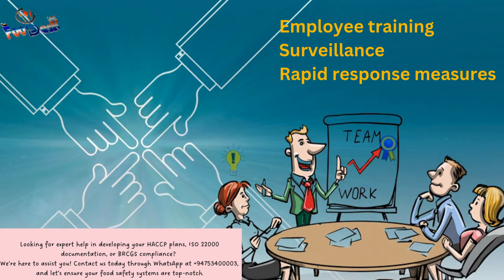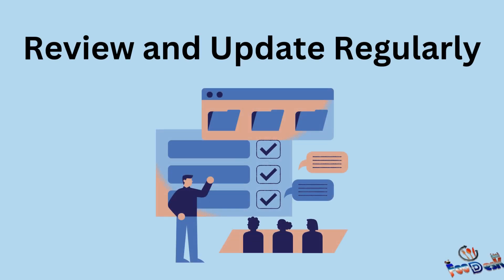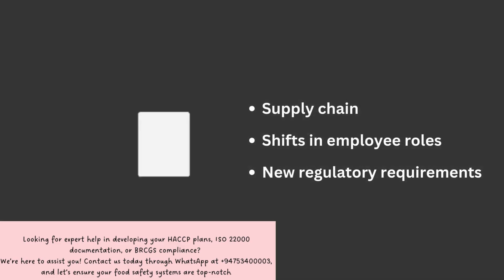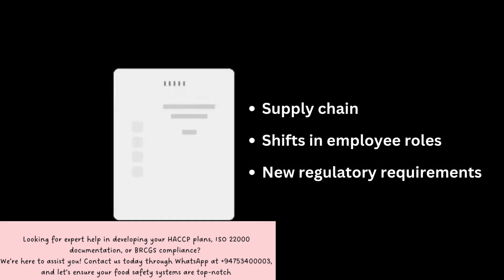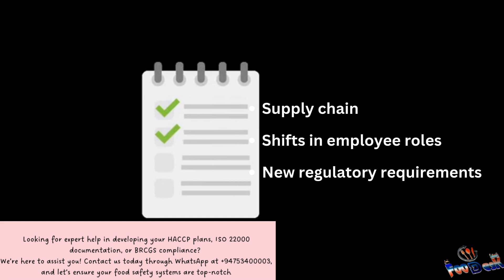By identifying risks in advance, having a plan for prevention, and empowering employees to act, the company mitigated what could have been a severe public health risk. Step 3: Review and update regularly. After establishing and implementing the risk assessment, it's crucial to review and update it regularly. Food defense threats evolve, and so should your assessment.